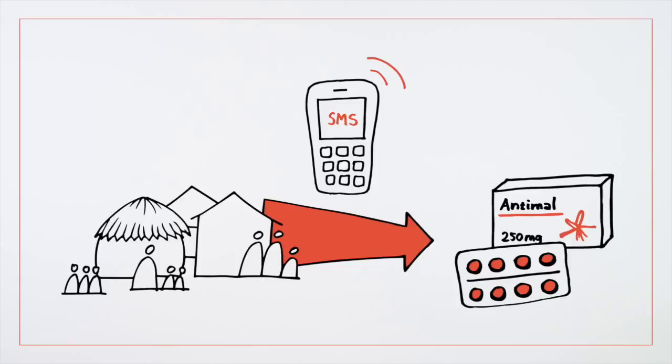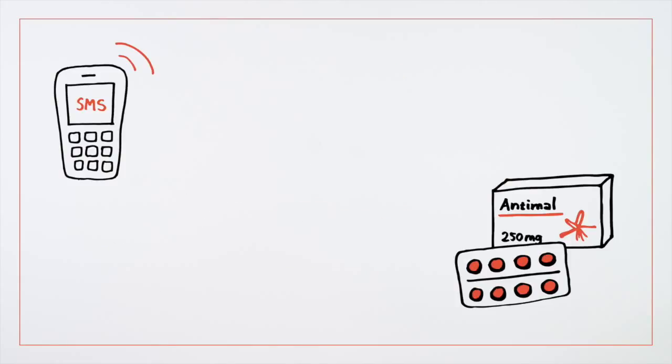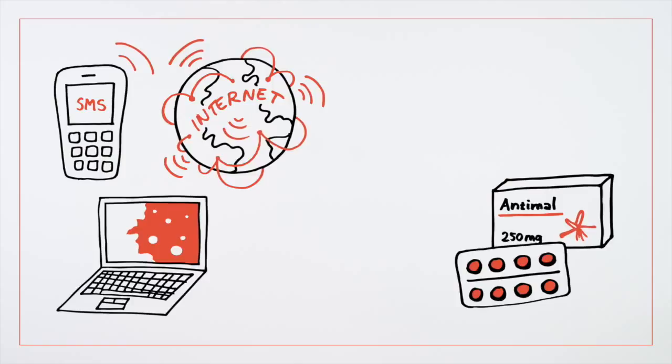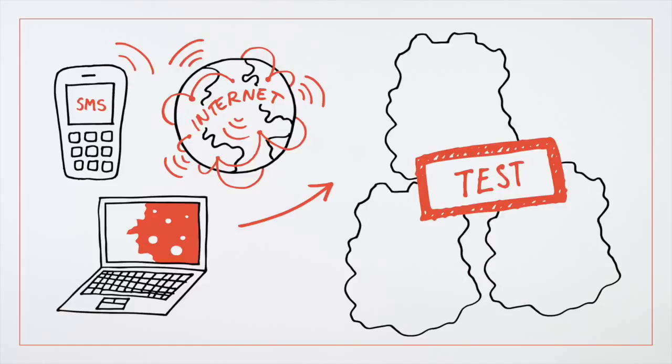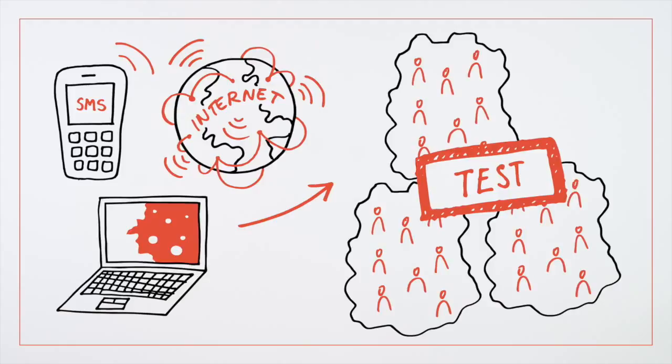It uses a combination of mobile phones, the internet, and electronic mapping to track weekly stock levels at public health facilities. The technology has been tested in three districts of Tanzania for six months, covering a population of 1.2 million people.